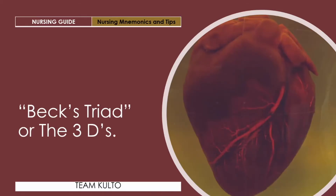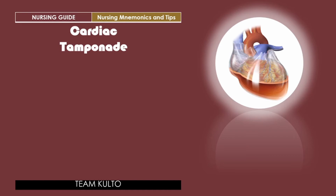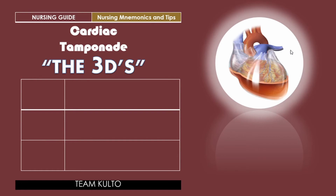So, Beck's triad — the 3Ds — how do you remember the concept of cardiac tamponade? Here are your 3Ds. First, you have distant or muffled heart sounds. It's muffled because there is fluid present. Remember, your normal heart sound is strong and consistent — lub-dub, lub-dub. It becomes muffled because of the fluids, meaning when you auscultate, the sound waves cannot get through properly, causing a muffled sound — as if something is wrapped around the heart.